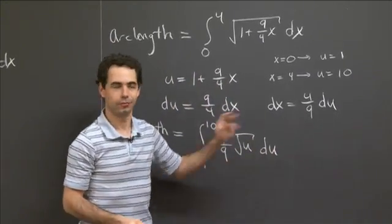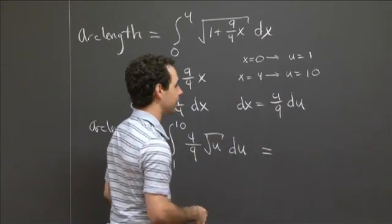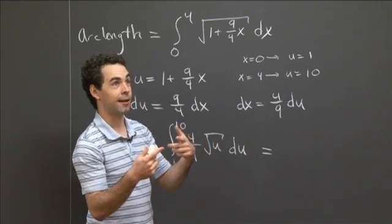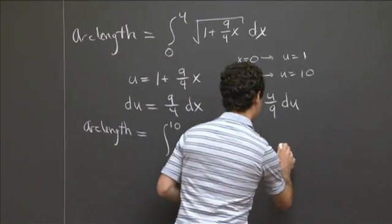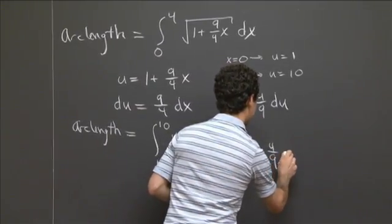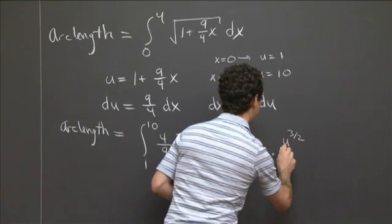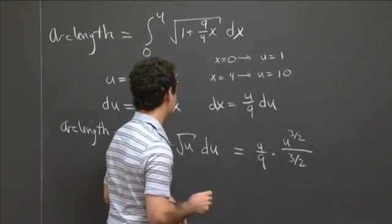OK, and so now this is really easy. So this is u to the 1 half. So I integrate that. So I'm going to get u to the 3 halves divided by 3 halves. So this is 4 ninths times u to the 3 halves divided by 3 halves